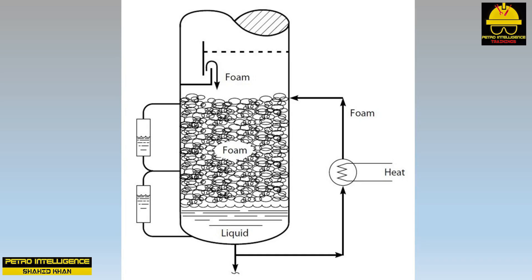Split liquid levels: the two gauge glasses shown in this picture both show a liquid level, but we cannot have alternating layers of liquid-vapor-liquid-vapor in the vessel. These split liquid levels are a positive indication of foam or froth in the bottom of the tower. If foam spans both taps on a gauge glass, the height of liquid in the glass measures the specific gravity of the foam. These split levels tell us nothing about the real liquid level — they are simply a sign of foam.